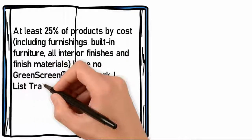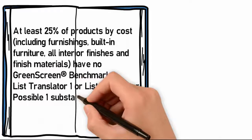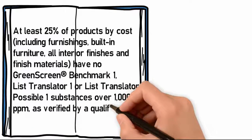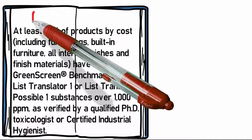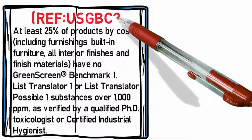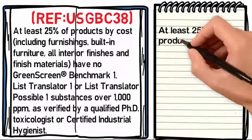This applies to substances over 1,000 ppm, as verified by a qualified Ph.D. toxicologist or Certified Industrial Hygienist (Reference: USGBC38). At least 25% of products by cost, including furnishings, built-in furniture, all interior finishes and finish materials, should meet these requirements.